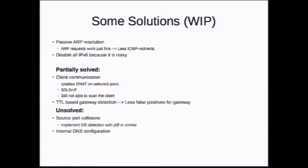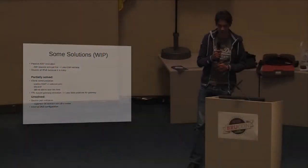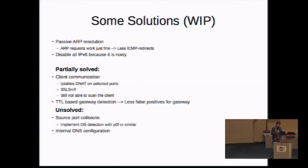Some of my solutions: you need the ARP table to stop bouncing everything off the default gateway. But you can't do ARP requests because the kernel just uses your MAC address and you don't want it on the network. So I listened for all ARP requests, which work just fine — it's an optimization basically. Disable IPv6 because it is really noisy. I used IPtables DNAT rules and SSLSniff to attack the client. Instead of using deterministic methods like most traffic to the internet — used by PwnPlug and Elva — I used TTL-based gateway detection because if it's uneven and not 1 or 255, it's probably the gateway.